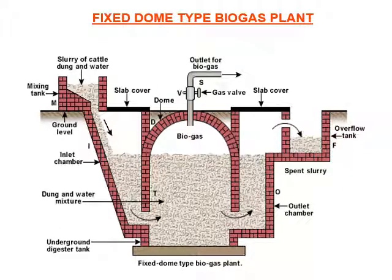You can see the fixed dome type biogas plant: slurry of cattle dung and water is mixed in the mixing tank, then sent to the digester where biogas is produced due to anaerobic respiration. The gas is expelled out through the gas outlet, and the leftover slurry is kept for use as manure.